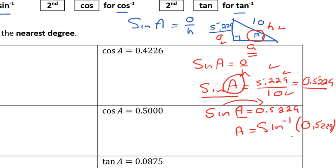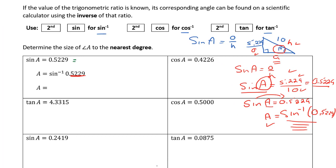Over here we still have to write in our ratio, 0.5229. Now we just have to figure out how do we enter this into our calculator to calculate the measure of angle A.